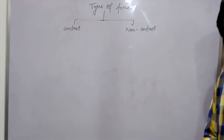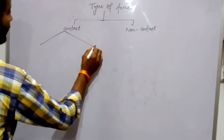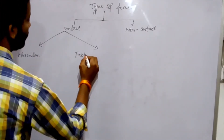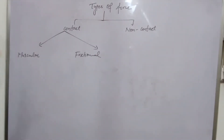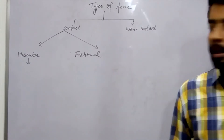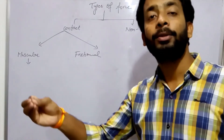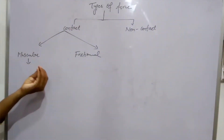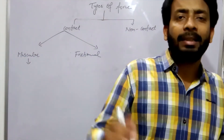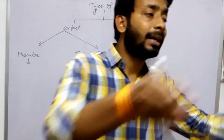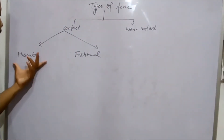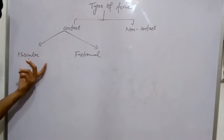Now we will discuss the types of contact force. The first force is muscular force and the second force is frictional force. Muscular force is the force that is developed by the muscles of the human or any animal. All those forces that are developed by the muscles are known as muscular force.